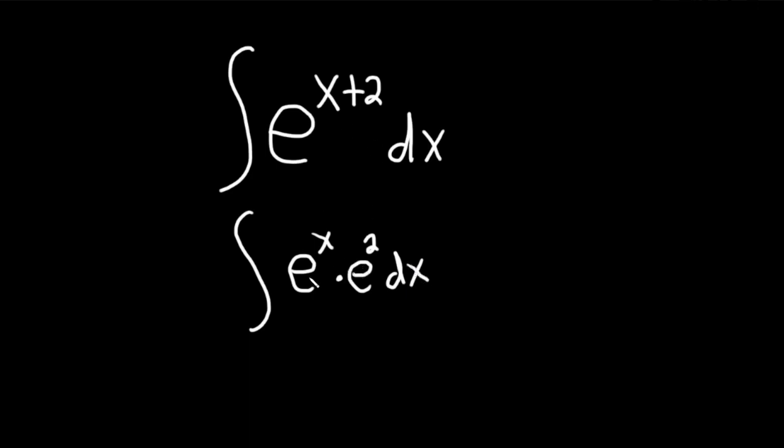And the reason you can do this is because whenever you have bases that are the same and you multiply, you add the exponents. So here the base is e, and when they're the same, when you multiply these you basically just write e and then you add x plus 2, which is what we have here.